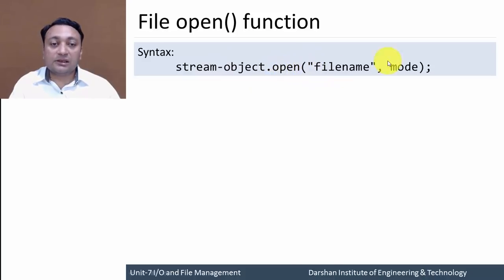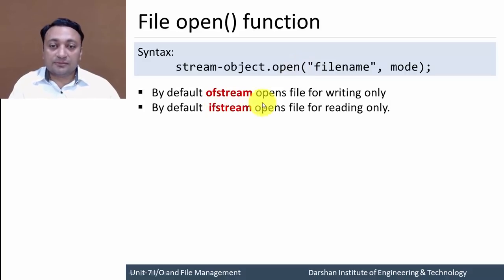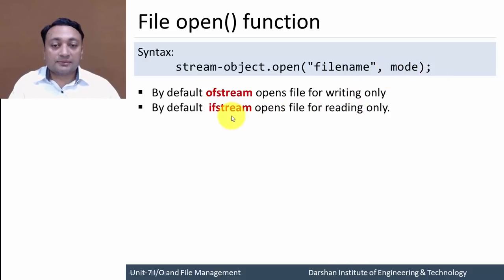Till now we have passed only the file name as argument to the open function, but an additional parameter is the file opening mode. By default, ofstream opens a file for writing only — if you are not providing any file opening mode, it will default to write mode. Similarly, ifstream opens a file for reading only.